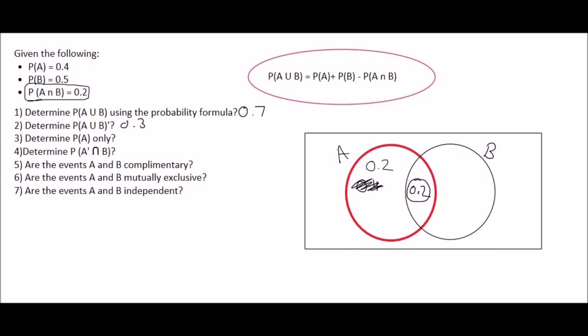Then if we look at circle B, they've told us that the probability of B is 0.5. But because we already have the 0.2 in this middle part, then this part would only be 0.3.